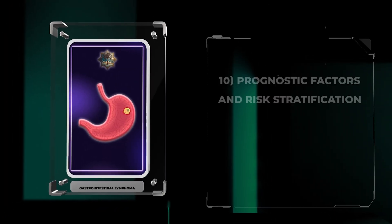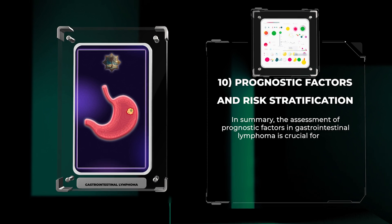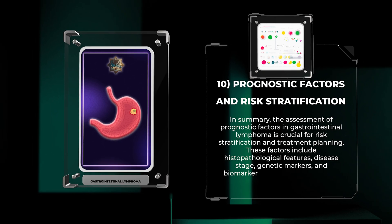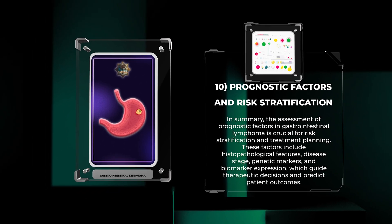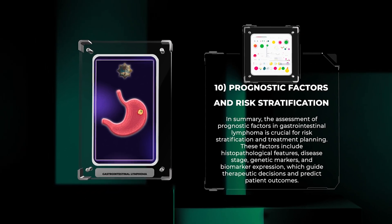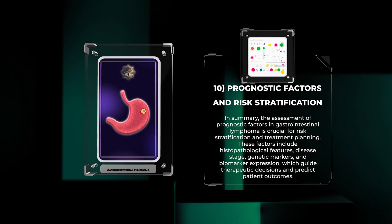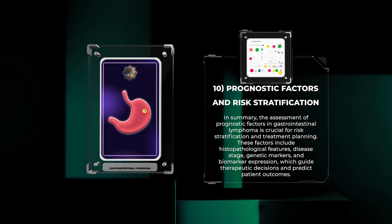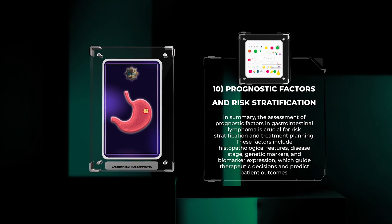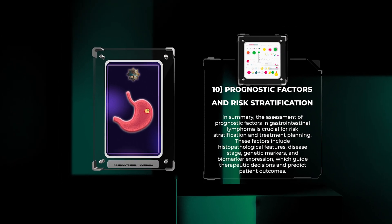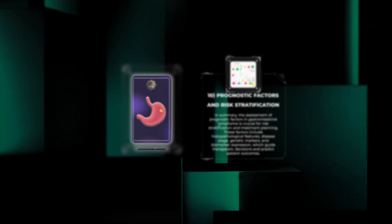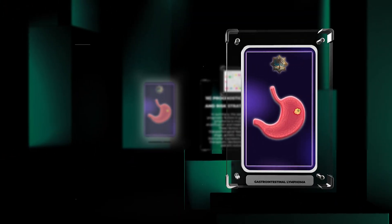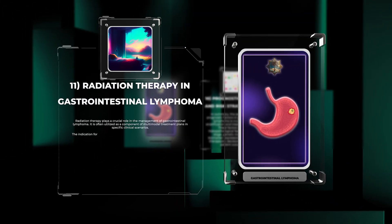Assessment of prognostic factors in gastrointestinal lymphoma is crucial for risk stratification and treatment planning. These factors include histopathological features, disease stage, genetic markers, and biomarker expression, which guide therapeutic decisions and predict patient outcomes.